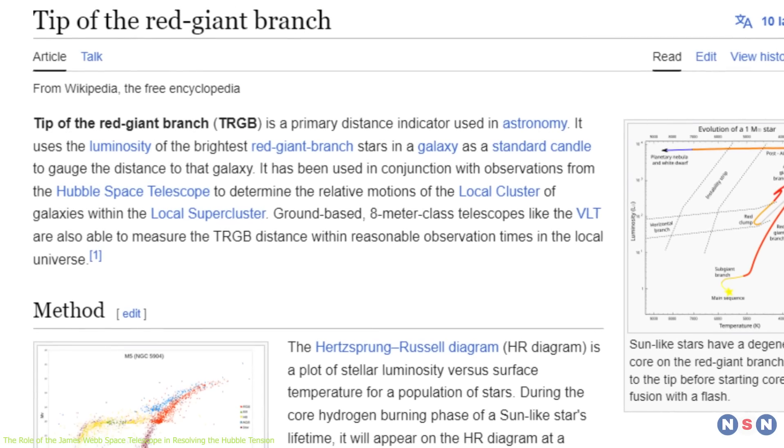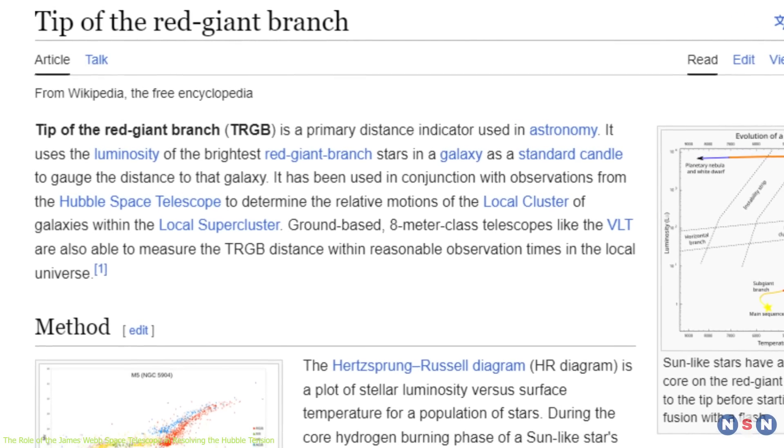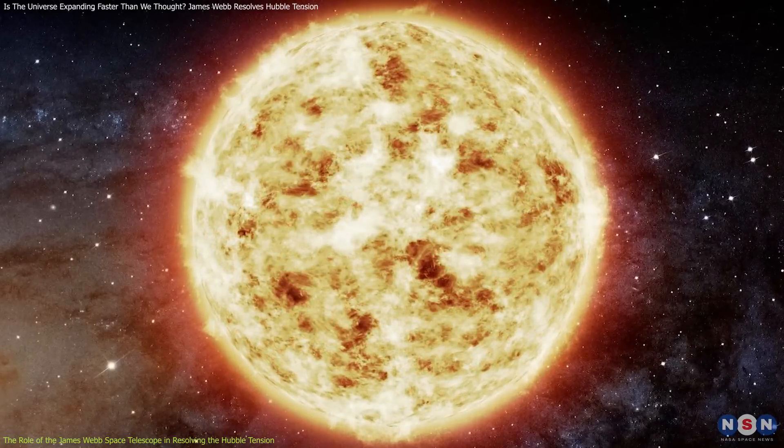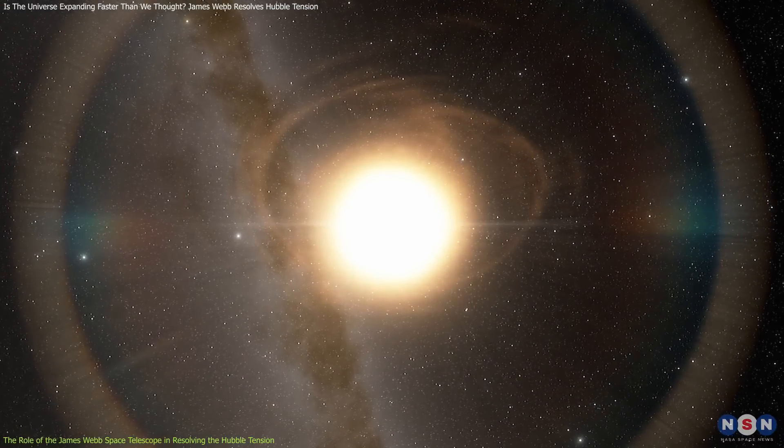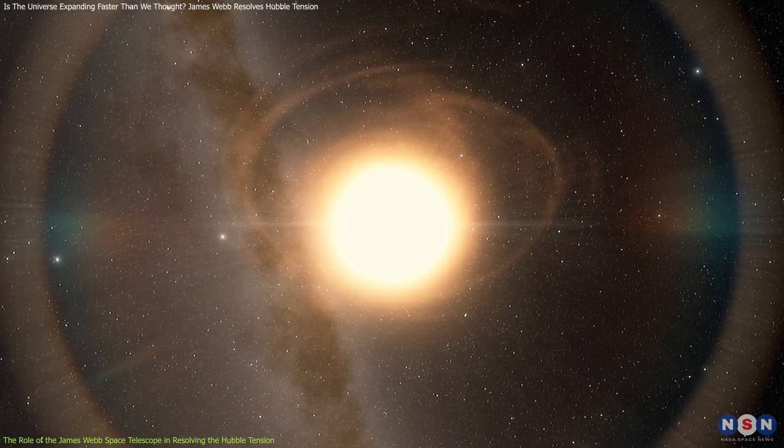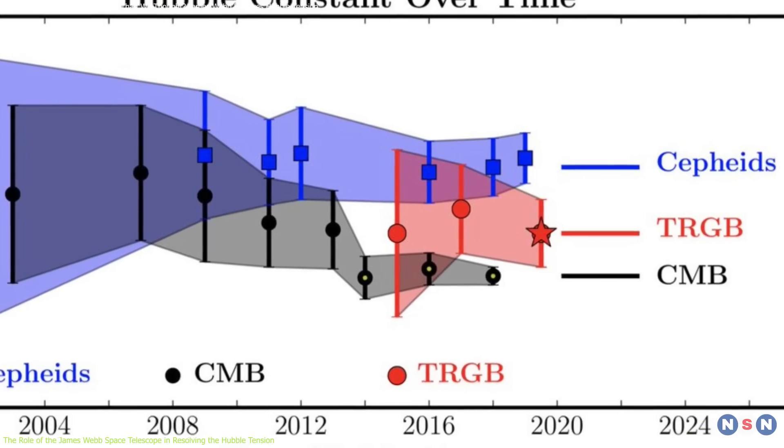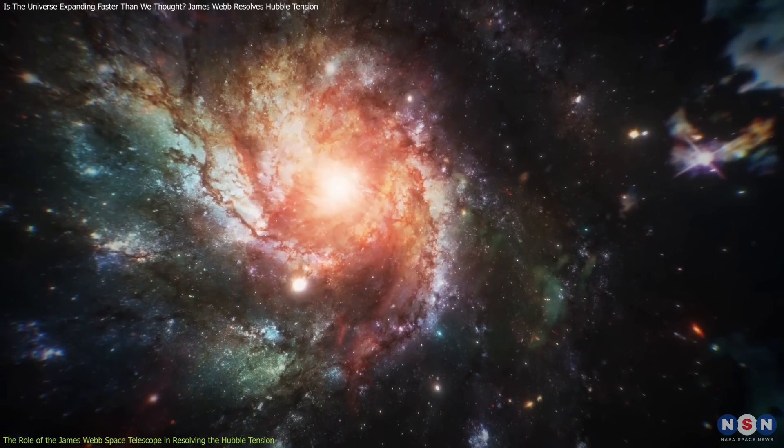The second method used by Friedman's team is known as the tip of the red giant branch, TRGB. This method focuses on a specific stage in the evolution of low-mass stars, where they reach a consistent maximum brightness before transitioning to the next phase of their life cycle. This method provides a reliable distance measurement, especially for older, more evolved galaxies.